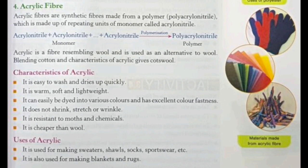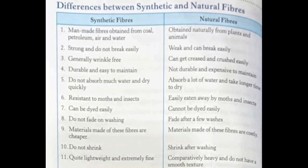The next synthetic fiber is polyester. As the name suggests, instead of monomer units, it is made up of ester units. Polyester can be mixed with wool or cotton to make poly-wool or poly-cotton, used for making clothes. It is one of the most heavily used synthetic fibers. It is especially useful in rainy countries, as it does not absorb much water and dries off easily.